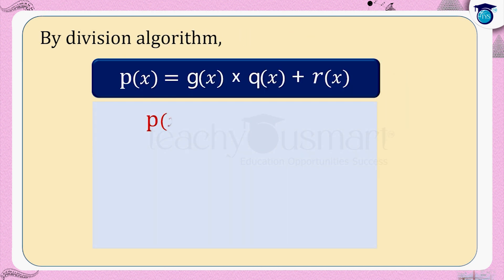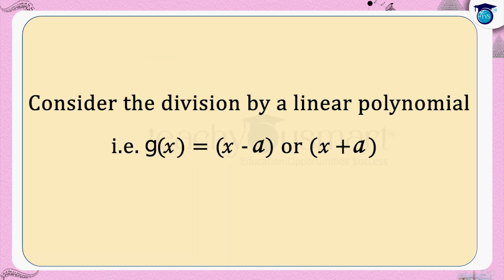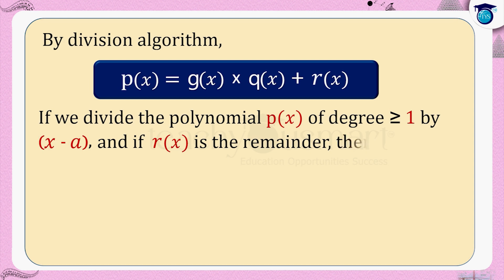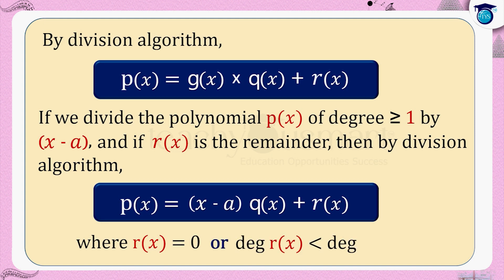In the division algorithm, p of x is the dividend, g of x is the divisor, q of x is the quotient, and r of x is the remainder. Now let us consider division by a linear polynomial, that is g of x equals x minus a. If we divide the polynomial p of x of degree greater than or equal to one by x minus a, and r of x is the remainder, then by the division algorithm we can write p of x equals x minus a multiplied by q of x plus r of x, where r of x is either zero or the degree of r of x is less than the degree of the divisor x minus a.